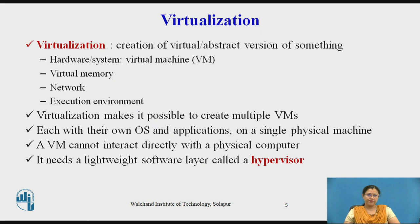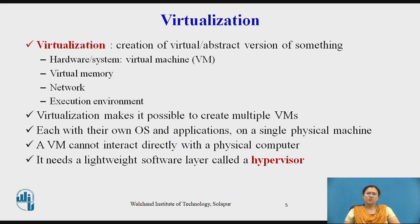Now we will see the term virtualization. Virtualization is the creation of a virtual or abstract version of something, such as a virtual machine, virtual memory, network, or execution environments. Virtualization makes it possible to create multiple VMs, each with their own operating system and application, on a single physical machine. A virtual machine cannot interact directly with a physical computer, so it needs a software layer called a hypervisor, which coordinates between it and the underlying physical hardware. The hypervisor allocates physical computing resources like memory, processors, and storage to each virtual machine, keeping each VM separate so they do not interfere with each other.